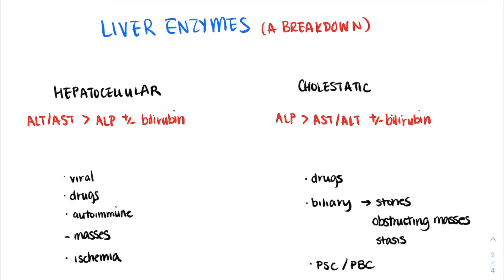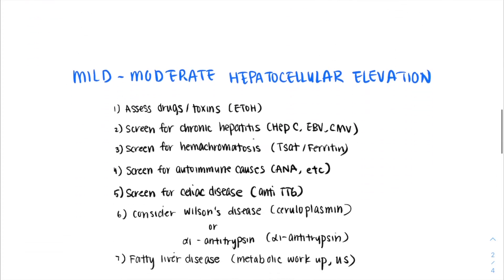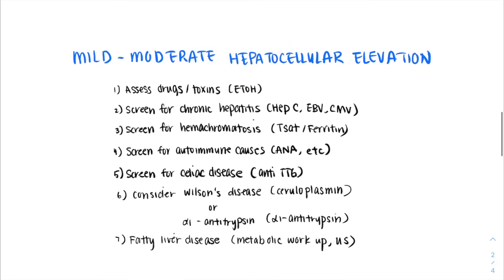Because a hepatocellular pattern is typically more common, we'll look into it with more detail. We first differentiate whether the elevation is mild to moderate — usually in the order of hundreds — or severe, usually 1,000 or above. With a mild to moderate elevation, we first want to review a history of prescription drugs, non-prescription drugs, and toxins as an etiology, which commonly includes alcohol.